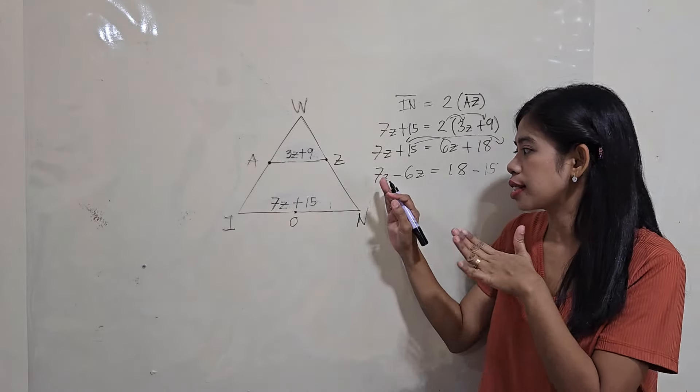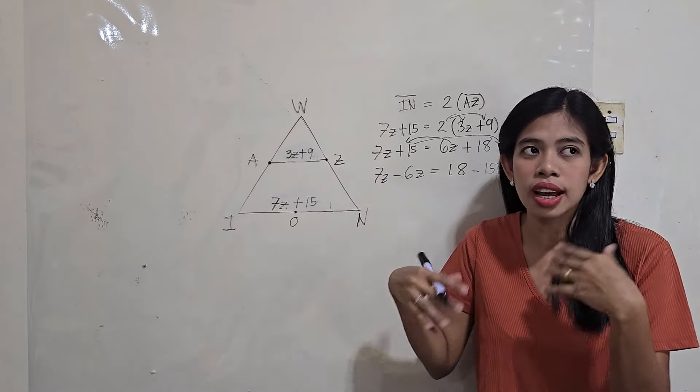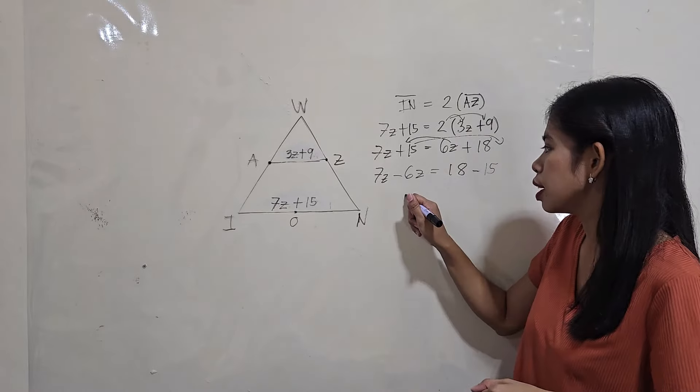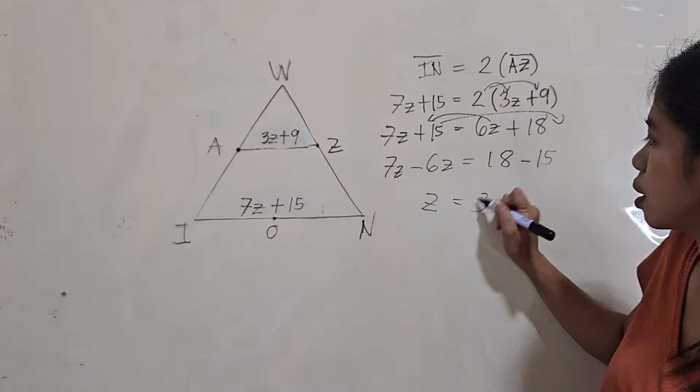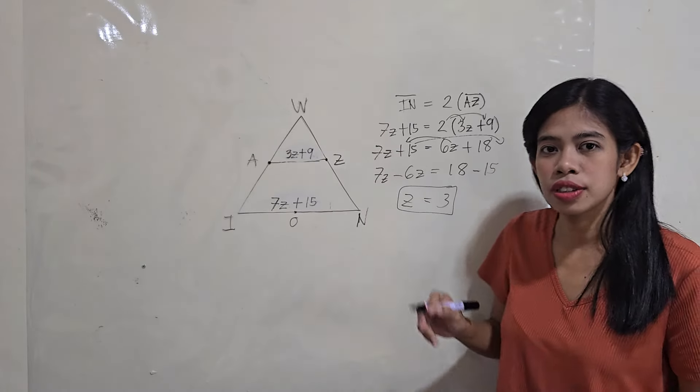Now, let's simplify. So, that's 7z minus 6z. It's just like 7 minus 6. So, that's 1. It's just z. And 18 minus 15 is 3. So, this is the value of z.